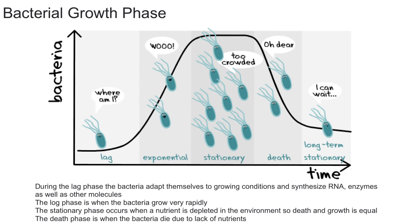To summarize, there are four phases of bacterial growth: the lag phase, the log or exponential phase, the stationary phase, and the death phase. Thank you for watching — if you found this useful, please give it a like, comment below with any questions, and subscribe for more videos like this.